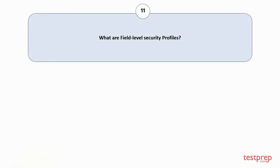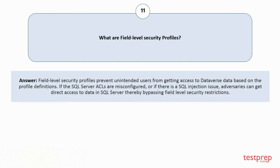Question number 11: What are field-level security profiles? Field-level security profiles prevent unintended users from getting access to Dataverse data based on the profile definitions. If the SQL server ACLs are misconfigured, or if there is a SQL injection issue, adversaries can get direct access to data in SQL server, thereby bypassing field-level security restrictions.